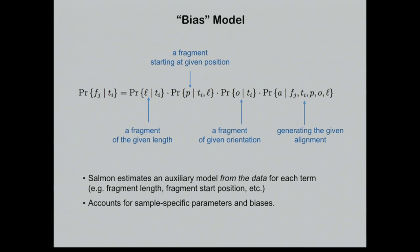This bias model can encode a lot of information about the origin of a fragment: the probability of generating a fragment with a particular length or insert size for paired-end reads, the probability of the fragment starting at a particular position on the transcriptome to account for position-specific biases, the probability the fragment was observed in a given orientation for stranded RNA-seq protocols, and the probability of seeing a particular alignment including matches, mismatches, insertions, and deletions. The bias model encodes all features of the likelihood that do not depend on the nucleotide fraction, and accounts for sample-specific parameters and biases.